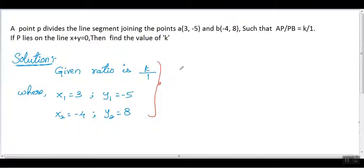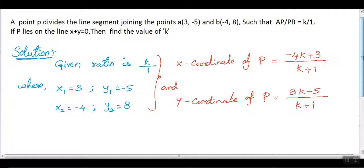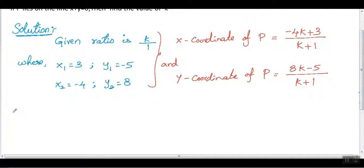Now write down the x and y coordinates of P. The formula is: x-coordinate of P equals (m·x₂ + n·x₁) divided by (m + n), where m and n is the ratio. We get x-coordinate of P is (-4k + 3) divided by (k + 1), and y-coordinate of P is (8k - 5) divided by (k + 1). So we got the x and y coordinates.